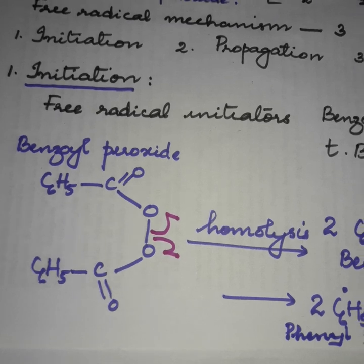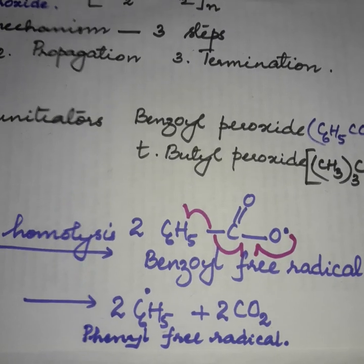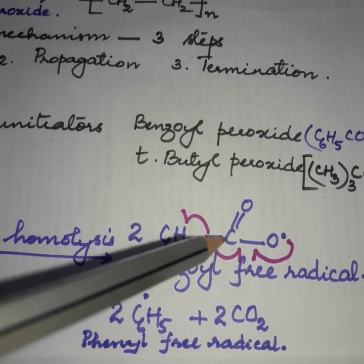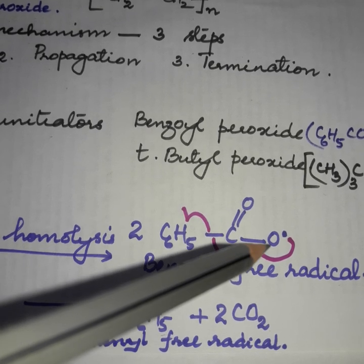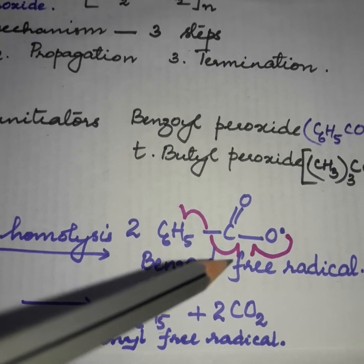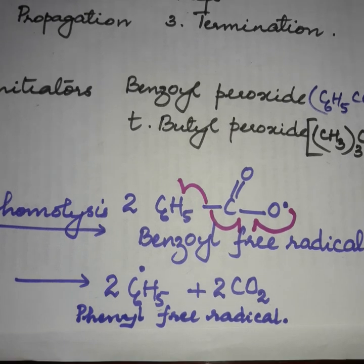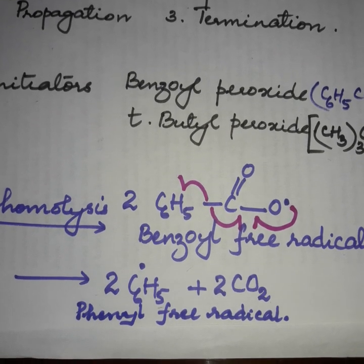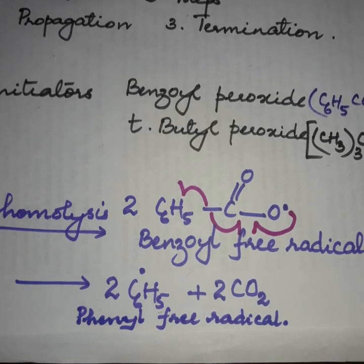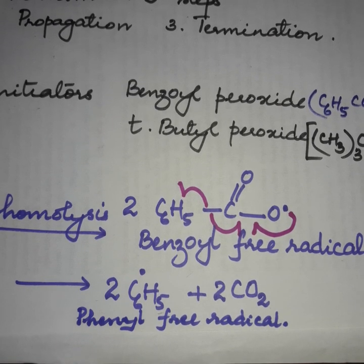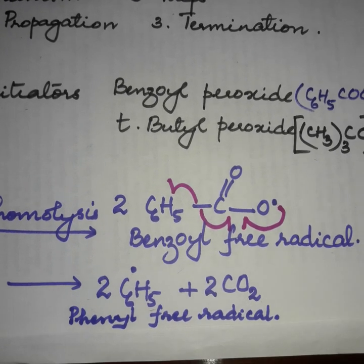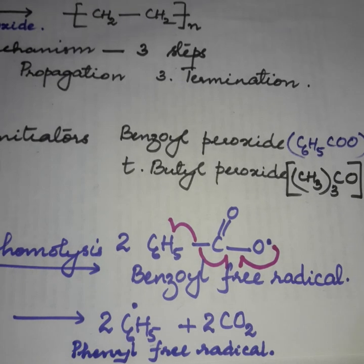Homolysis results in what is called the benzoyl free radical, with the formula C6H5-C(=O)-O•. This benzoyl free radical is highly unstable, so it undergoes rearrangement to form the C6H5• phenyl free radical along with carbon dioxide. The phenyl free radical produced then attacks the monomer in the propagation step.